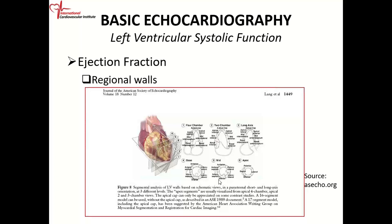At the mid-cavity level, you have the papillary muscles, and at the base you have the mitral valve. When we look at the apex, we divide it into four regions: the top is the anterior wall, the bottom is the inferior wall, the lateral wall, and the septal wall. The reason we do this is because the different segments have different blood supply, so if someone has a heart attack and you see just the anterior wall not moving, you can surmise which blood vessel is occluded.